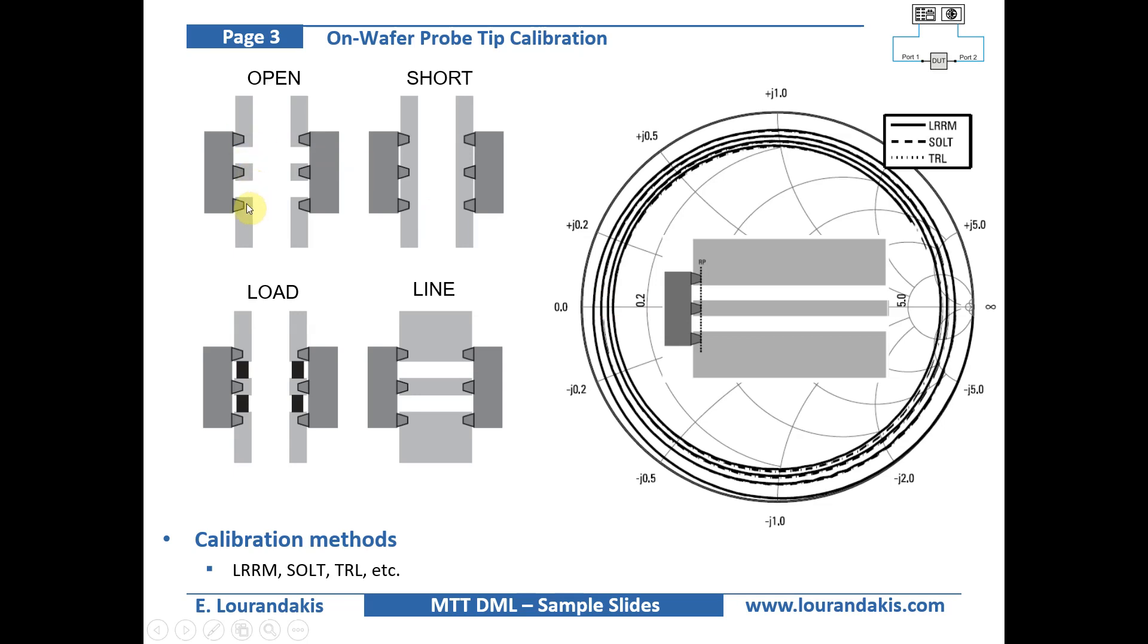The calibration is performed with a well-known set of structures called calibration standards, similar to what we know from the coaxial setups. On-wafer standards as shown here are planar metal patterns like the open, short, load and line, which match the probe configuration. In our example, a GSG configuration.